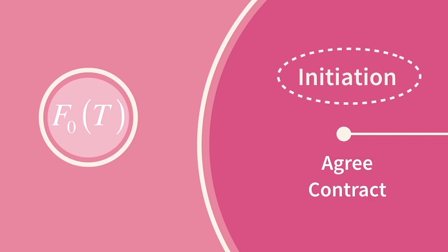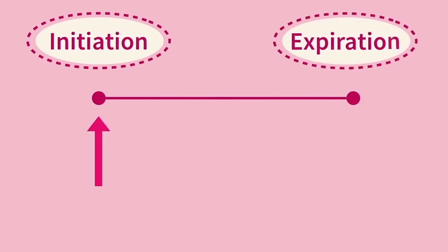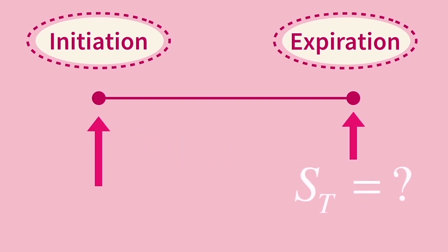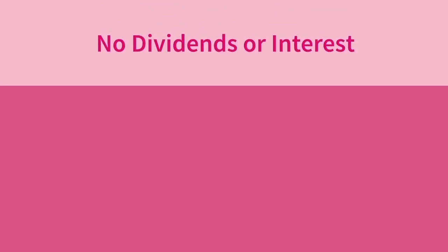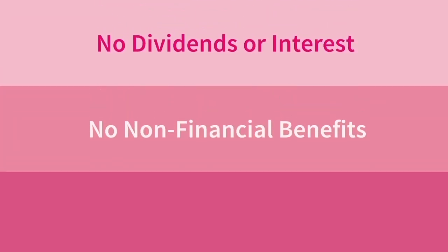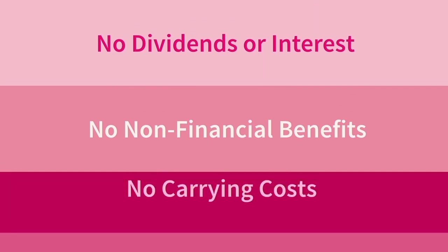This is the first piece of the LOS — the forward price. This price is set in the contract and doesn't change over the term. How do we calculate it? The problem is that we are here at the initiation of the contract, with an uncertain future and no way to accurately predict the value of the underlying at expiration. Let's start with the most basic case: assume the underlying asset pays no dividends or interest, offers no non-financial benefit to the holder, and has no carrying costs.